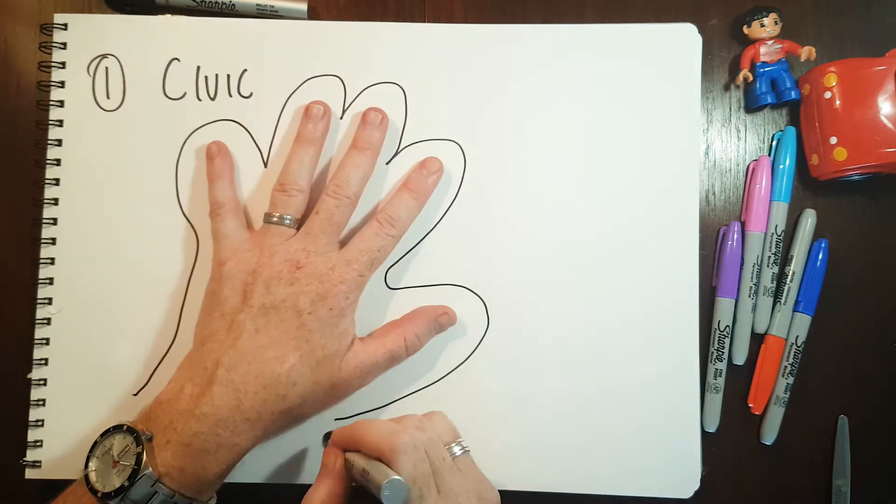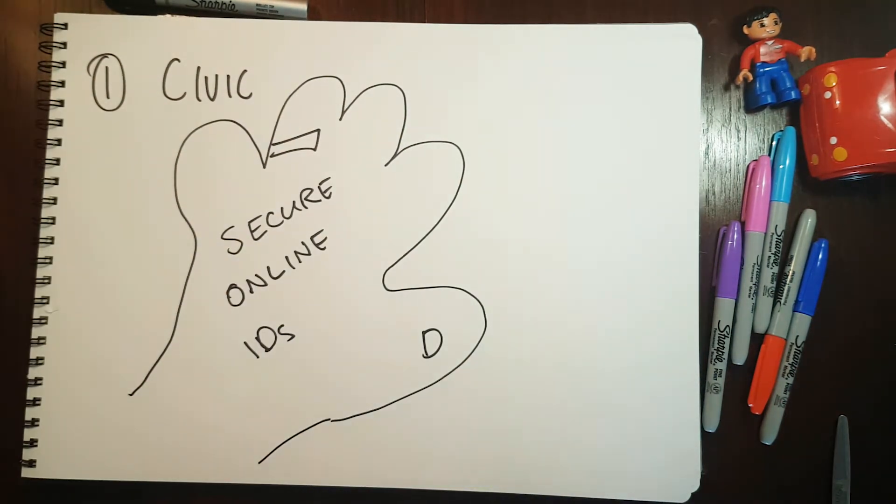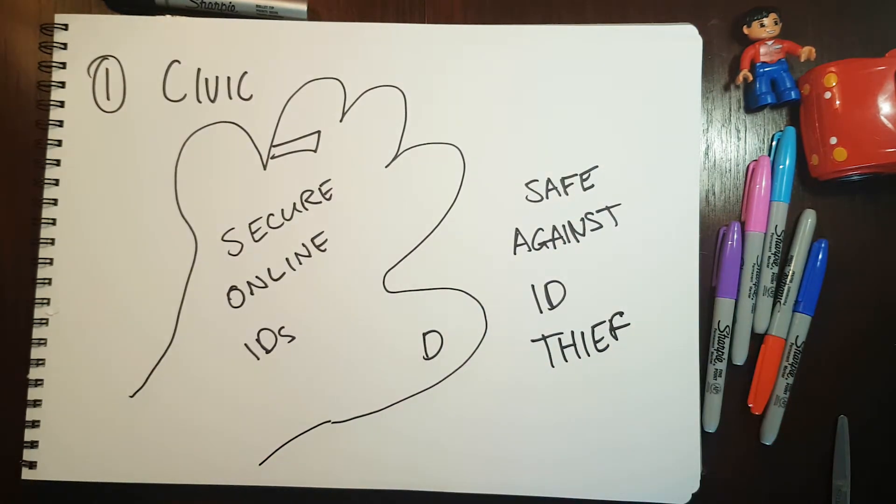Here are five real-world examples of how companies are using this technology. Blockchain technology is being used by companies like Civic to create a secure online digital identity. By combining multiple reputable sources they are able to protect you against identity theft.